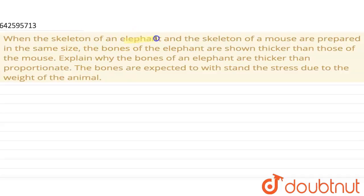When the skeleton of an elephant and the skeleton of a mouse are prepared in the same size, the bones of the elephant are shown thicker than those of the mouse. Explain why the bones of an elephant are thicker than proportionate, if the bones are expected to withstand the stress due to the weight of the animal.